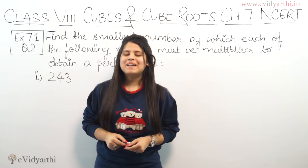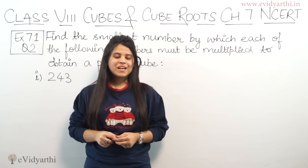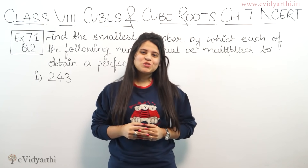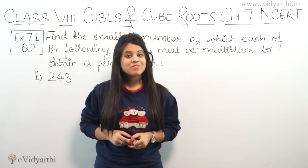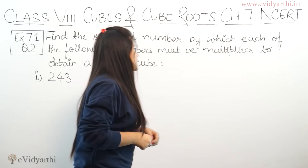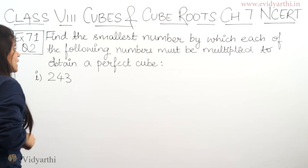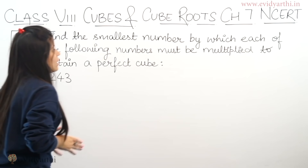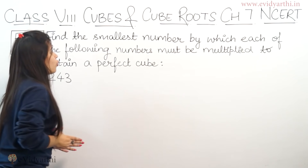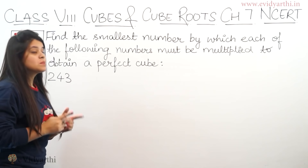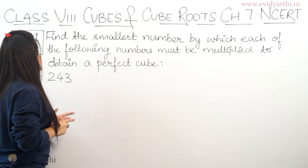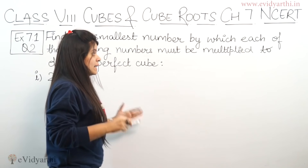Hello everyone, this is Vansi from Evidyati. Coming to question number 2, exercise 7.1. In this question we have to find the smallest number by which each of the following numbers must be multiplied to obtain a perfect cube.